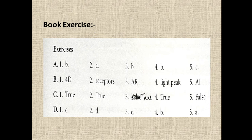This is your book exercise. Question number 1: Light Peak is introduced by — light peak is introduced by Intel, so answer will be B. Next: John McCarthy introduced artificial intelligence, so answer will be A. Third: electrovibration was discovered in 1954, so answer will be B. And fourth: light peak uses optical cables, so answer will be B again.